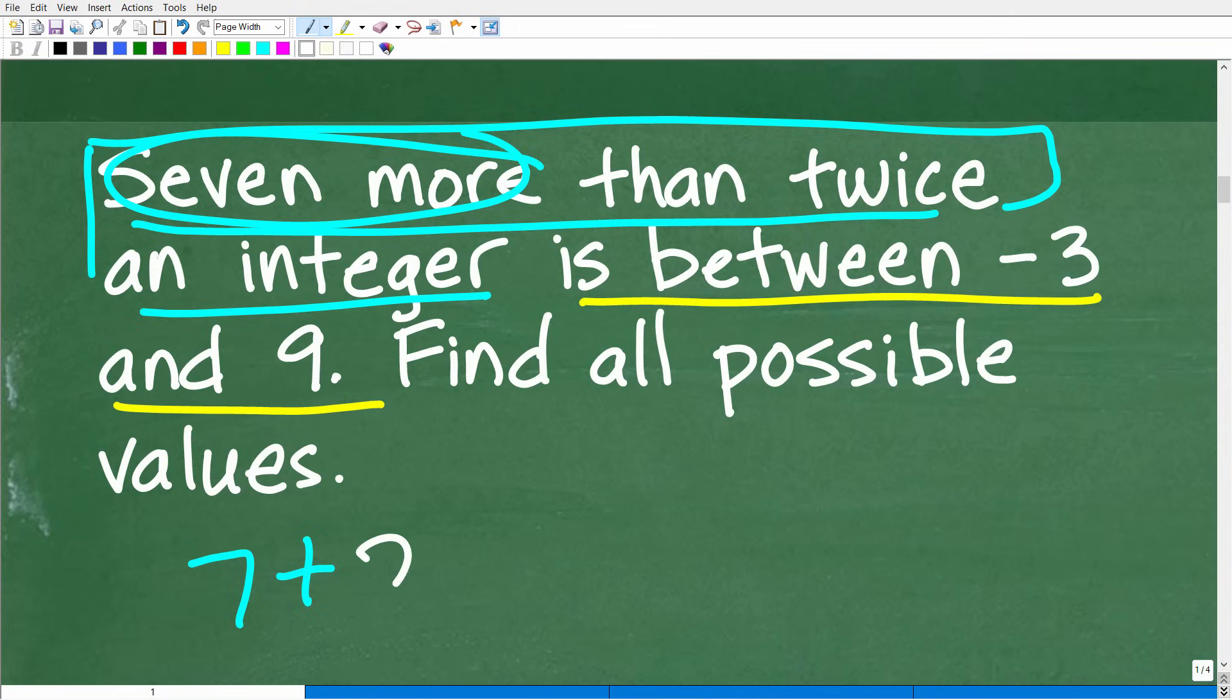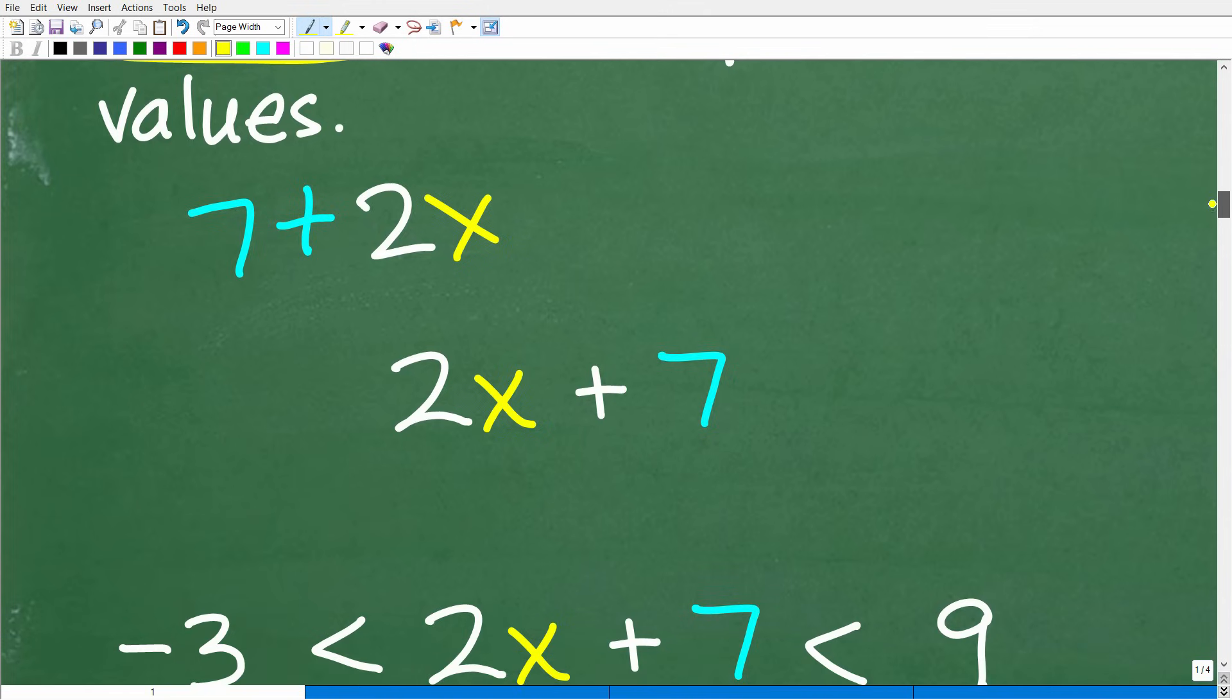Twice an integer. Maybe like two times x. That's exactly what we're going to do. So 2x plus 7 is seven more than twice an integer.